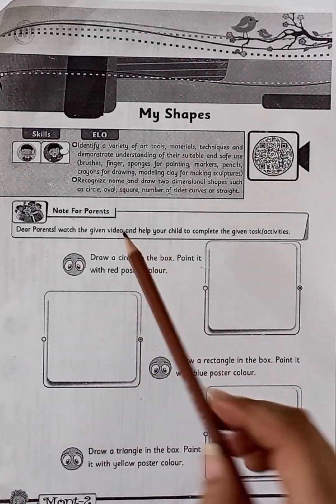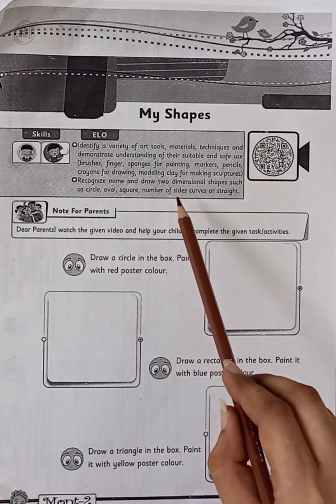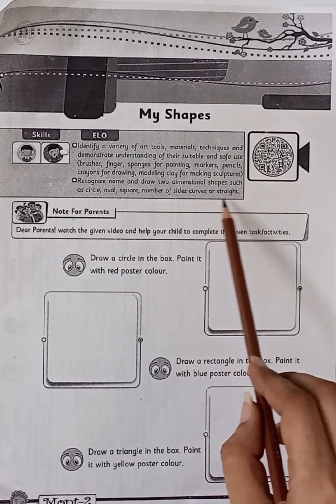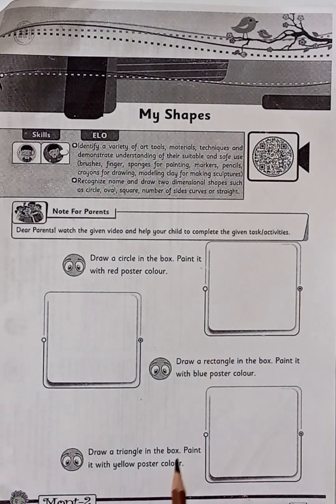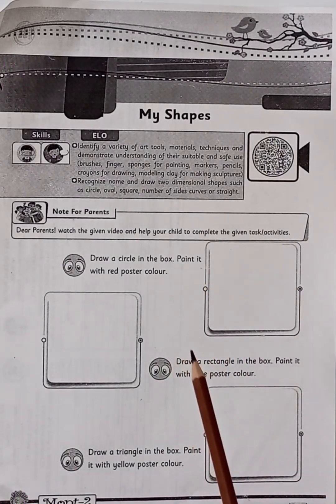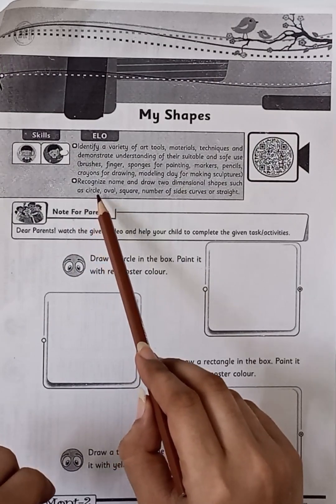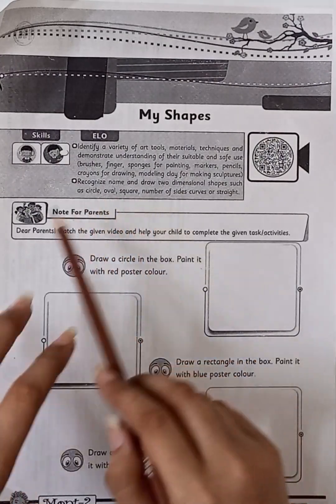The second one is recognize, name, and draw two dimensional shapes such as circle, oval, square, number of sides, curves or straight. So what do we have to do here? We have to draw shapes. We have mentioned here that this is circle, oval, square. So we have created three shapes.